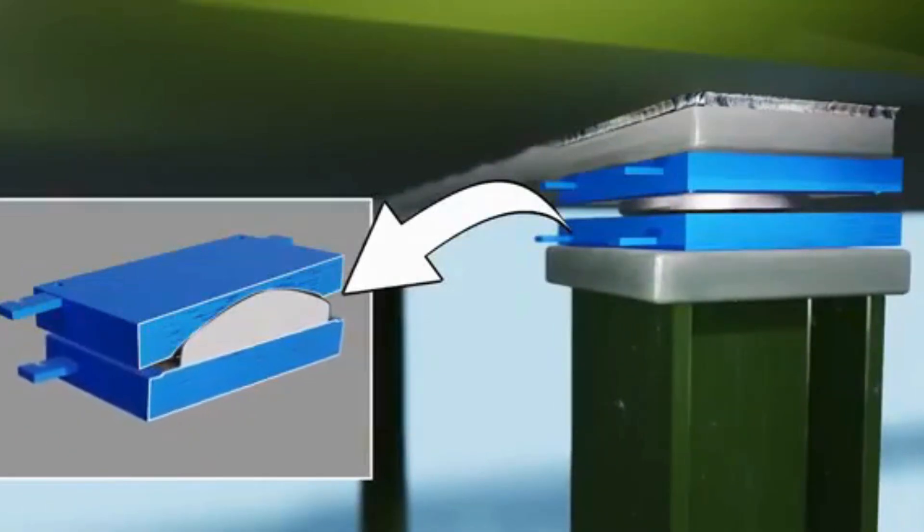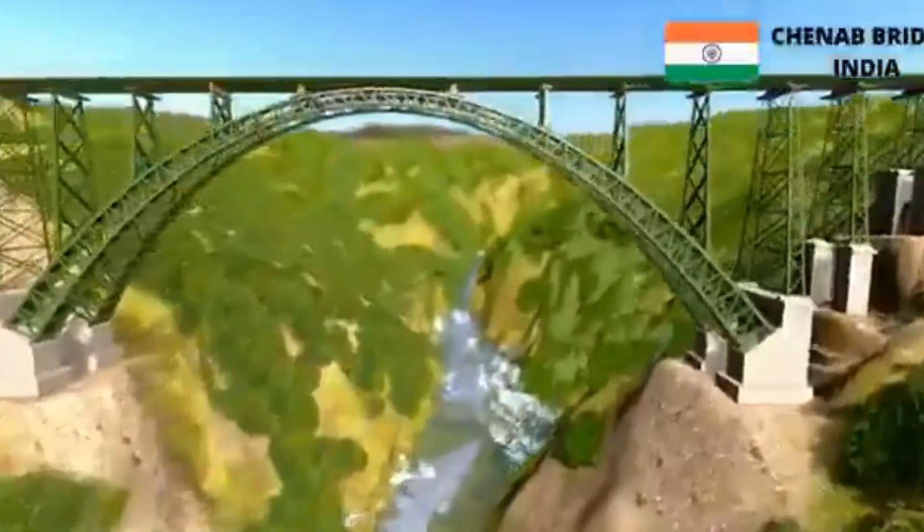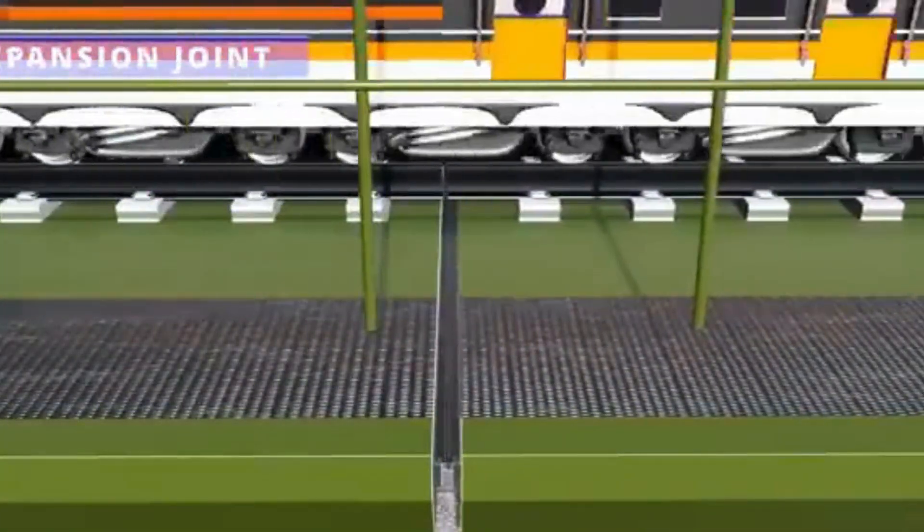To isolate the rail deck, the Chenab Bridge also makes use of expansion joints. The way expansion joints work is a feast for the eyes. The movement of the box-shaped rubber structure makes this functioning possible.